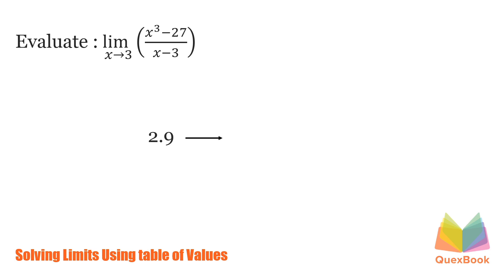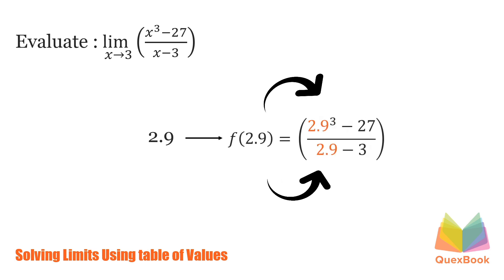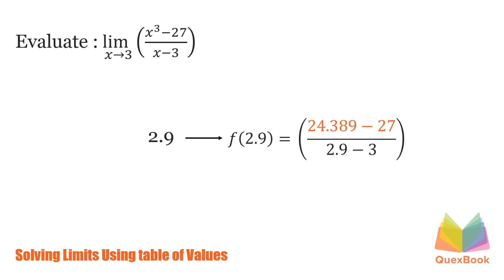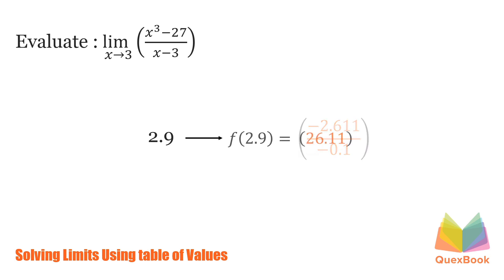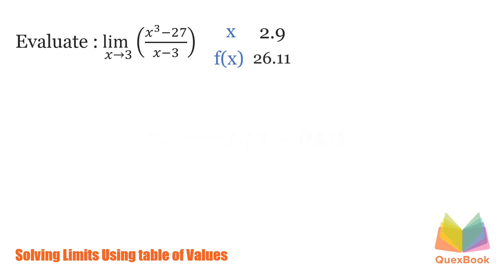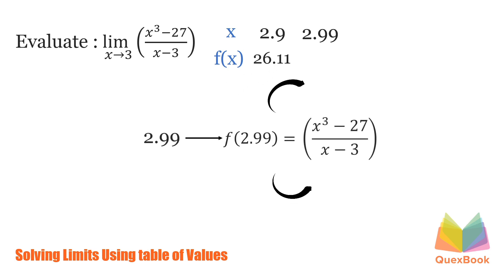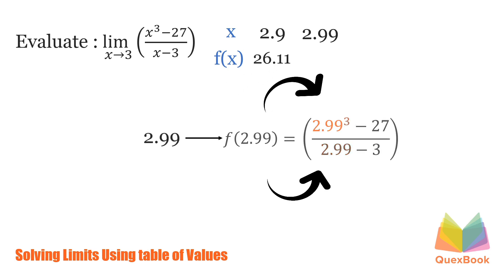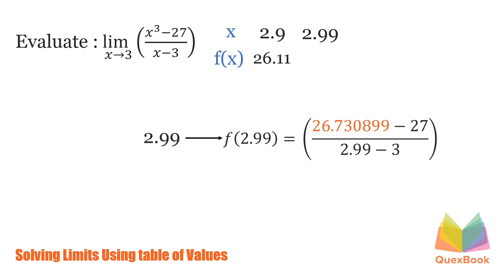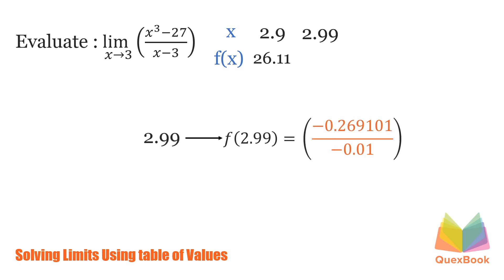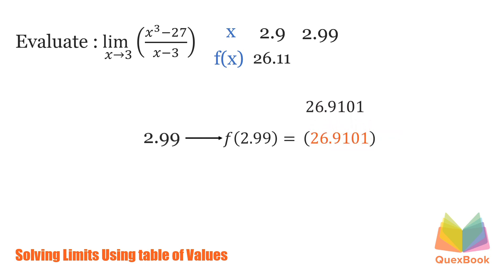Let us try 2.9. We have 2.9 cubed minus 27 over 2.9 minus 3. Simplifying: 2.9 cubed is 24.389, minus 27 is negative 2.611. 2.9 minus 3 is negative 0.1. Dividing the function, we'll have 26.11. Let's try another number much closer to 3 — how about 2.99. 2.99 cubed minus 27 over 2.99 minus 3. 2.99 cubed is 26.730899, minus 27 is negative 0.269101. Now, 2.99 minus 3 is negative 0.01. Dividing the function, we'll have 26.9101.